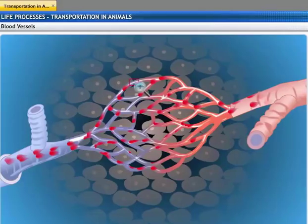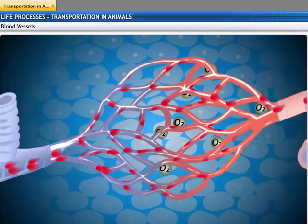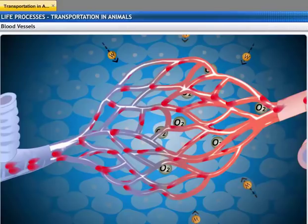The smallest vessels have walls which are one cell thick and are called capillaries. The thin walls of the capillaries allow oxygen and nutrients to pass from the blood into the tissues, and waste products from the tissues into the blood.